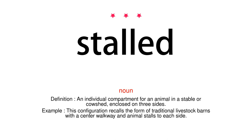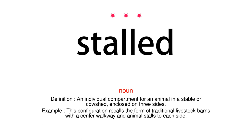Noun. Definition: an individual compartment for an animal in a stable or cowshed, enclosed on three sides. Example: this configuration recalls the form of traditional livestock barns with a center walkway and animal stalls to each side.